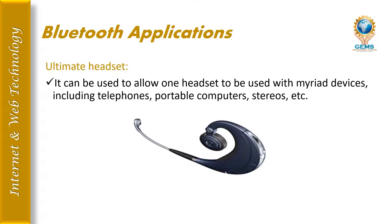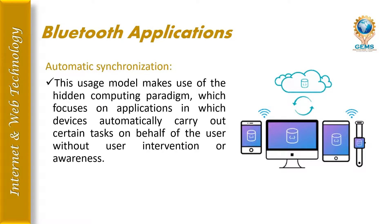The ultimate headset application allows one headset to be used with multiple devices, including telephones, portable computers, and more. Automatic synchronization automatically synchronizes two Bluetooth devices. This usage model makes use of a hidden computer pattern, where devices automatically carry out certain tasks on behalf of the user without user intervention or awareness.